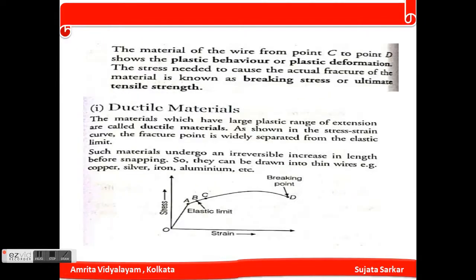The next topic is ductile materials. The material which has a large plastic range of extension is called a ductile material. In the stress-strain curve, the fracture point is well separated from the elastic limit. Such materials undergo an irreversible increase in length before snapping, and they can be drawn into thin wires. Examples include copper, silver, iron, and aluminium.